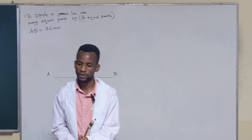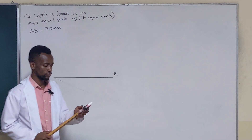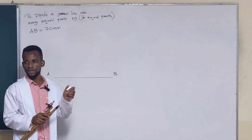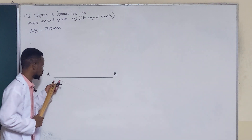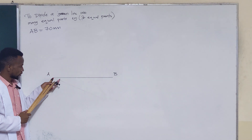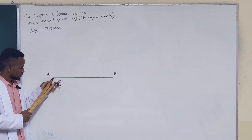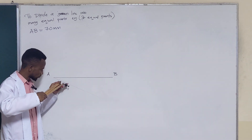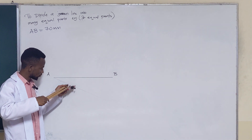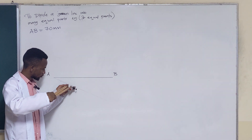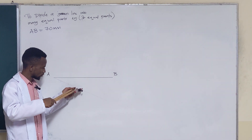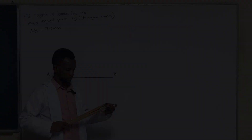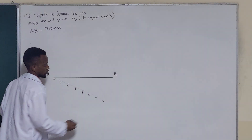You get your compass, or even your ruler — it doesn't matter — as long as you are able to maintain equal spacing between the marks. So for example, here is zero, then two, three, four, and up to seven.